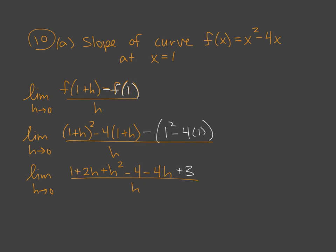Now at this point, if we plugged in h is 0, we'd have issues. We'd have 0 over 0. So the 1 minus 4 is negative 3. That cancels with the plus 3. Then we have a plus 2h and a minus 4h. And that can combine to a minus 2h. So we have an h squared and then a minus 2h all over h.